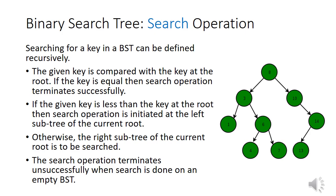Let us consider a binary search tree given on the right hand side. We consider the node having key value 6 to be searched in the binary search tree. First, 6 will be compared with the key value at the root. The key value of the root is 8. After comparing 6 with 8, we can see that 6 is less than the key value at the root. Therefore, the search operation will be initiated on the left subtree.